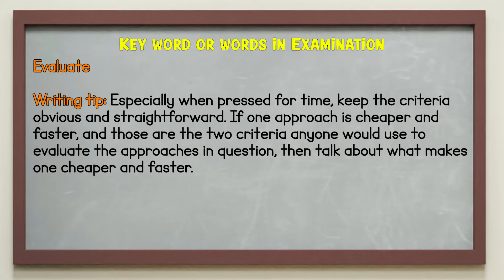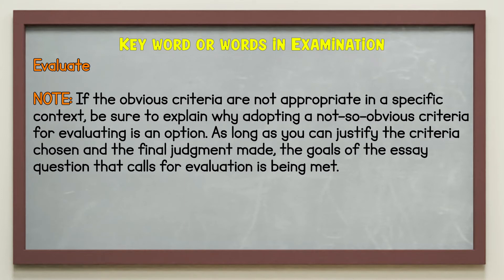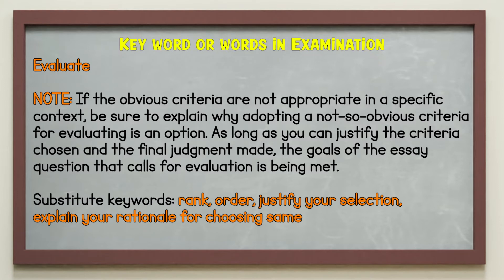If one approach is cheaper and faster, and those are the two criteria anyone would use to evaluate the approaches in question, then talk about what makes one cheaper and faster. Do not forget to also show what makes the alternative approaches more expensive and slower. Thoroughness counts when writing evaluations. Note: if the obvious criteria are not appropriate in a specific context, be sure to explain why adopting a less obvious criteria for evaluating is an option. As long as you can justify the criteria chosen and the final judgment made, the goals of the essay question calling for evaluation are being met. Substitute keywords are rank, order, justify your selection, and explain your rationale for choosing.